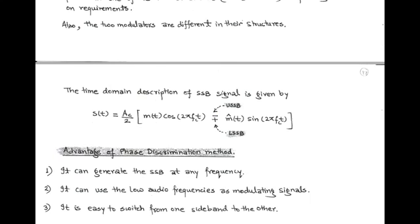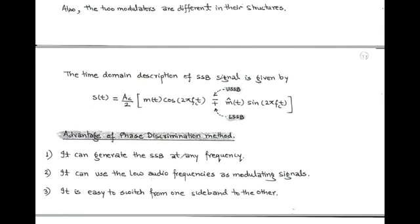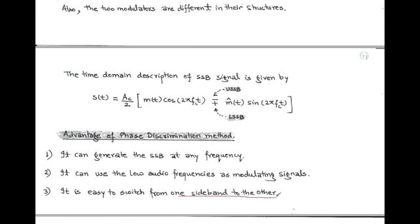There are advantages of using the phase discrimination method. First, it can generate SSB at any frequency. Second, it can use low audio frequencies as the modulating or message signal. Third, it is easy to switch from one sideband to another — that is, from upper single sideband to lower single sideband.